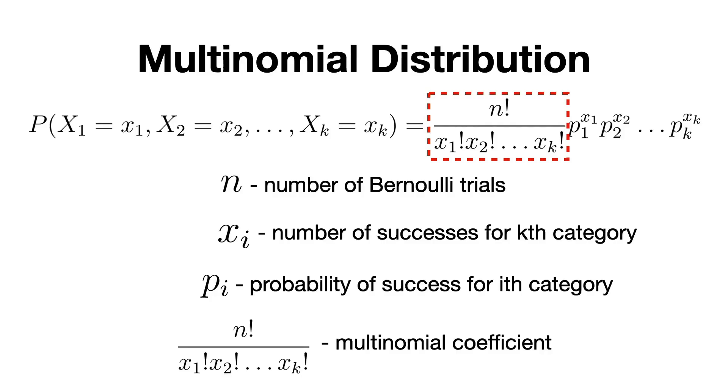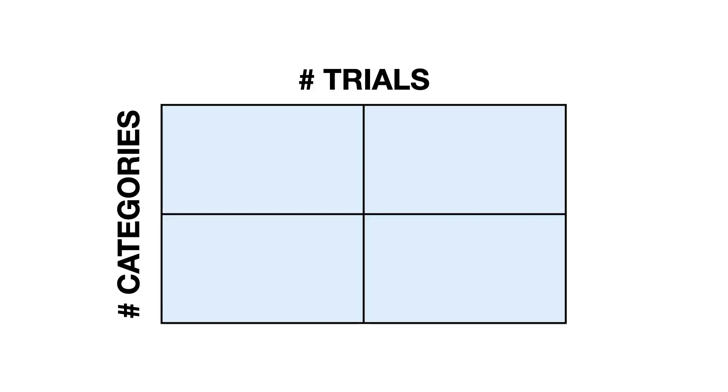To sum everything up, let's take a quick look at this table which compares these distributions based on the number of trials on the x-axis and the number of possible outcomes on the y-axis.